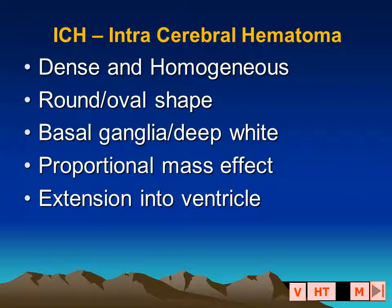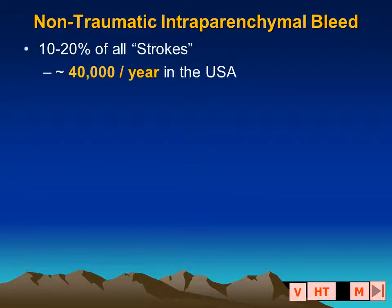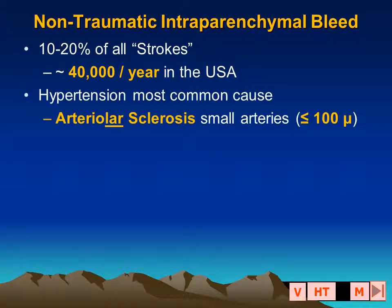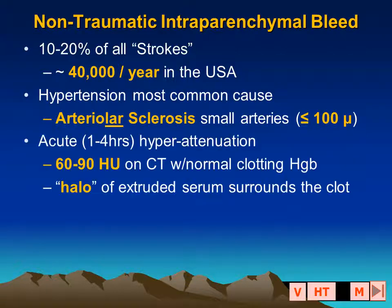Primary intracerebral hemorrhages are usually hyperattenuating and relatively homogeneous on an acutely performed CT scan, and they predominantly affect the deep parts of the brain. There may be extension into the ventricle, and blood may then end up in the subarachnoid space. Non-traumatic hemorrhages represent up to 20% of all strokes. The most common cause is hypertension; amyloid angiopathy is less frequent.